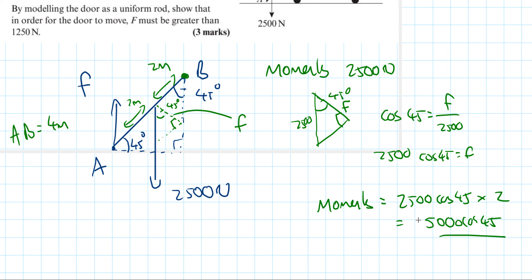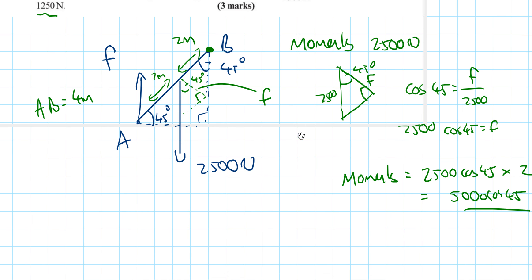You can find the exact value on a calculator, but because we want to show F is greater than 1,250, I'll leave it in this form for now. This is a useful exam technique when the expression looks complicated — leave it in exact form and simplify later.